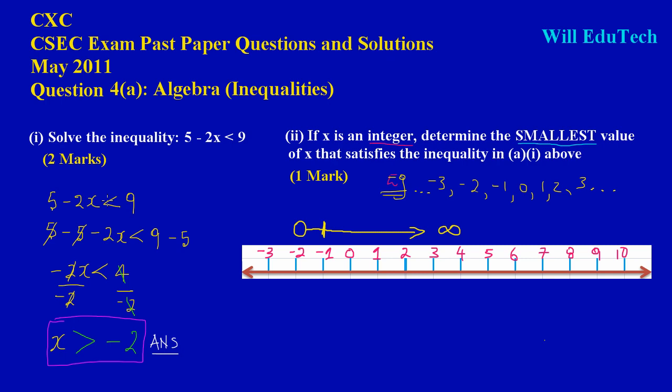So if x is an integer, the smallest value that x could take obviously would be -1, because there's not another integer between -2 and -1. Negative 1 is the closest integer to -2. Therefore, the smallest integer that x can take is -1. That's your answer. Okay guys, bye-bye.